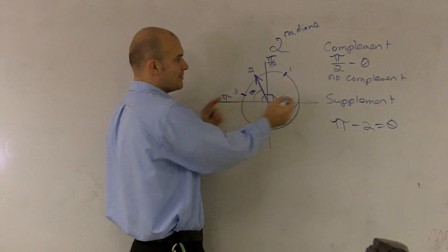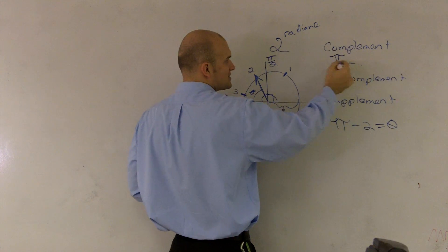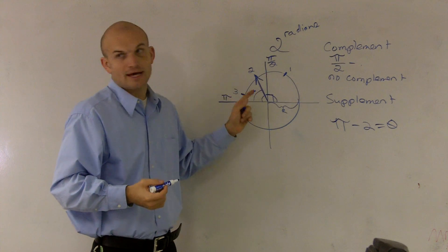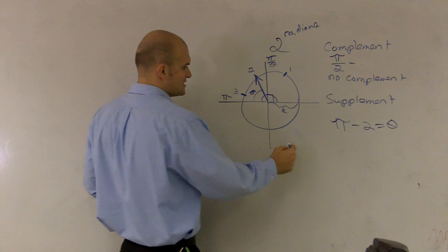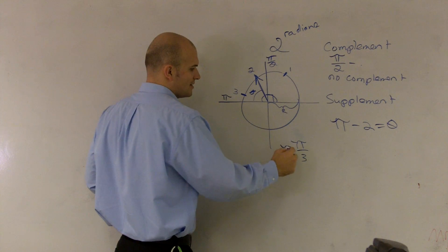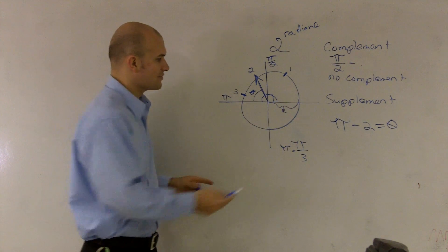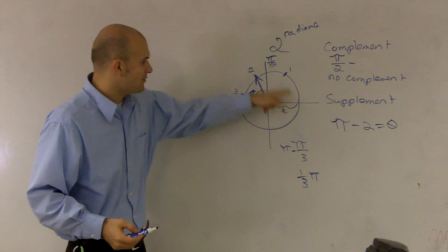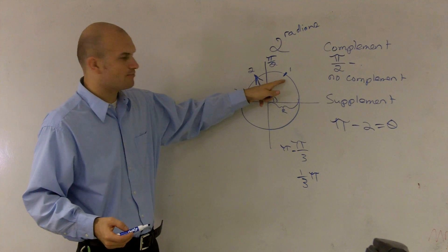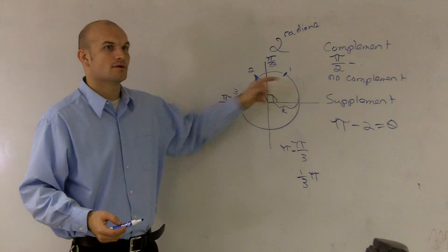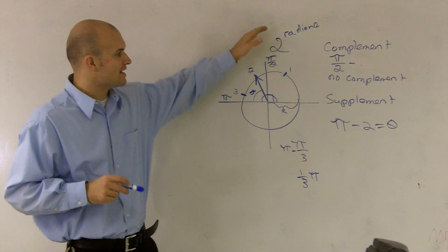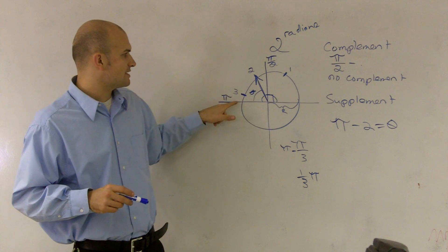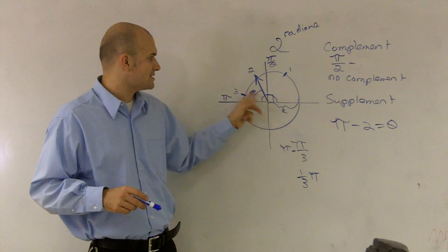So whatever your angles are — remember, for complement, you subtract whatever your angle is from pi over 2, and for supplement, you subtract your angle from pi. So if it's just radians, you just do that. I know a lot of you got confused because when it was like pi over 3, it said pi minus pi over 3. Well, pi over 3 is a fraction — it's really one-third of pi. So it's just a different way of understanding radians. Radians is just your length of your radius. Since it's greater than 90, there's no complement. But to get your supplement, you just do pi minus your angle, which is two radians, equals your theta.